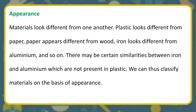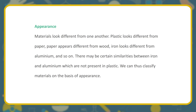Appearance: materials look different from one another. Plastic looks different from paper, paper appears different from wood, iron looks different from aluminum, and so on. There may be certain similarities between iron and aluminum which are not present in plastic. We can thus classify materials on the basis of appearance.